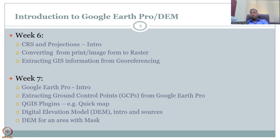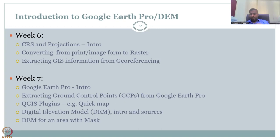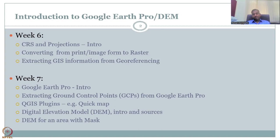GCPs from Google Earth Pro are another way of taking control points if your map doesn't have them or an image doesn't have them. In the previous lecture, we used lat-longs available on the map for GCPs. But suppose your map doesn't have lat-longs, or you're taking an image from a plane — those don't have lat-long boundaries. So how do you know where to ground those images? That is where you can extract locations from Google Earth Pro.